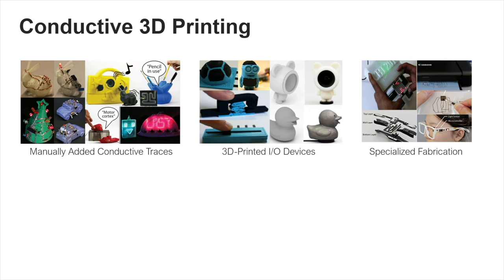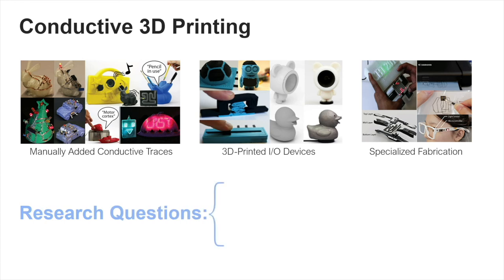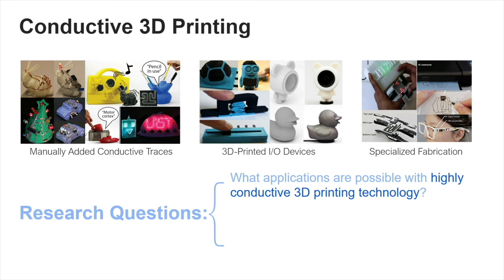People have already explored multiple ways to create conductive traces on 3D printed objects, like using highly conductive copper pit tapes, and also conductive 3D printing materials which can be directly embedded in the 3D printed objects for interaction. We can also use other alternative printing processes incorporated into 3D printing. This leads to two main research questions: what applications are possible with highly conductive 3D printing technology, and what tools can support such a big shift?